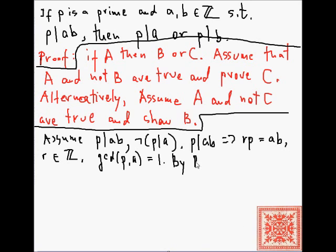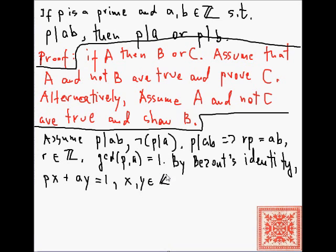Since p is a prime and p doesn't divide a, then the greatest common divisor of p and a is equal to 1. And by Bezout's identity, there exist two integers x and y such that p times x plus a times y is equal to 1. So, b is equal to b times 1 and 1 is equal to p times x plus a times y. That's actually the critical step to realize in this proof.